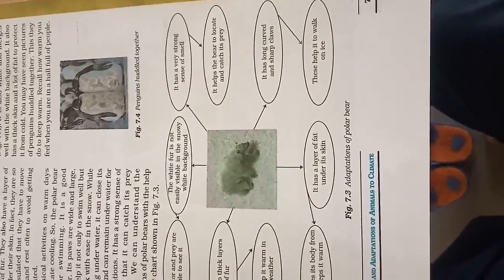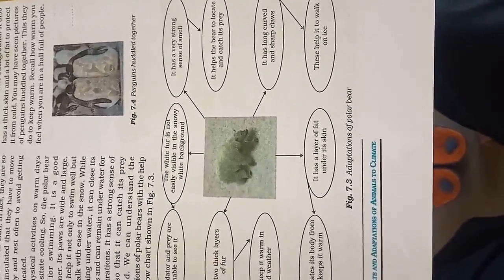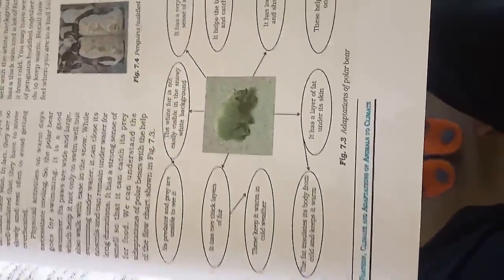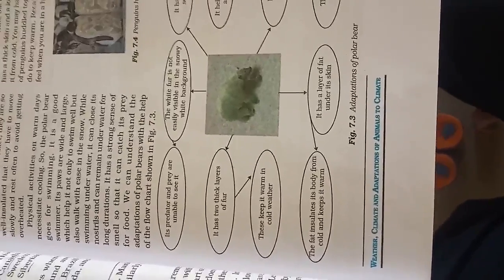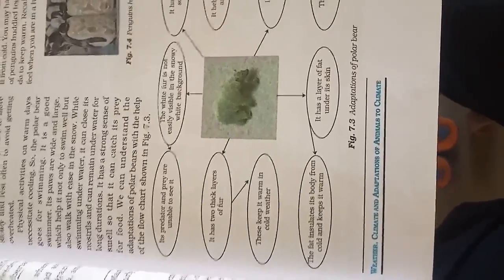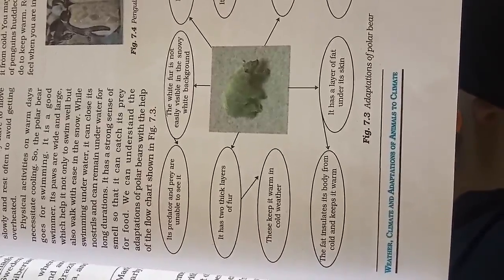It helps the bear to locate and catch its prey. It has long, curved, and sharp claws — this helps it to walk on ice. The bottom of its feet are soft and have that long structure, so the polar bear can easily walk in those regions. It also has a layer of fat under the skin — fat substances are deposited under the skin — so the polar bear can easily survive in polar regions. The fat insulates its body from cold and keeps it warm.